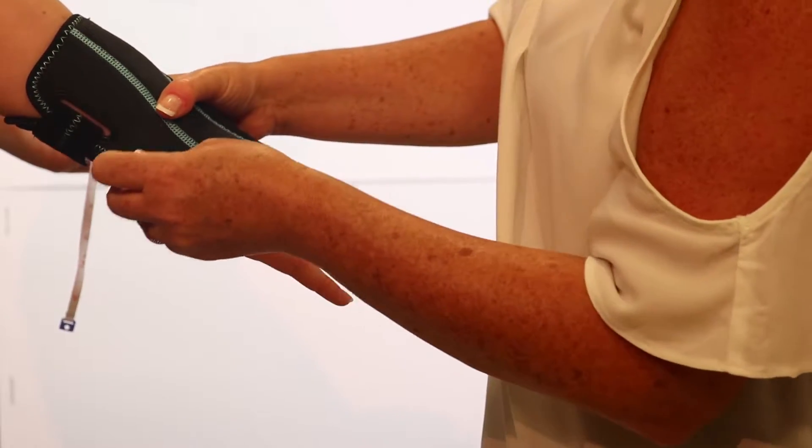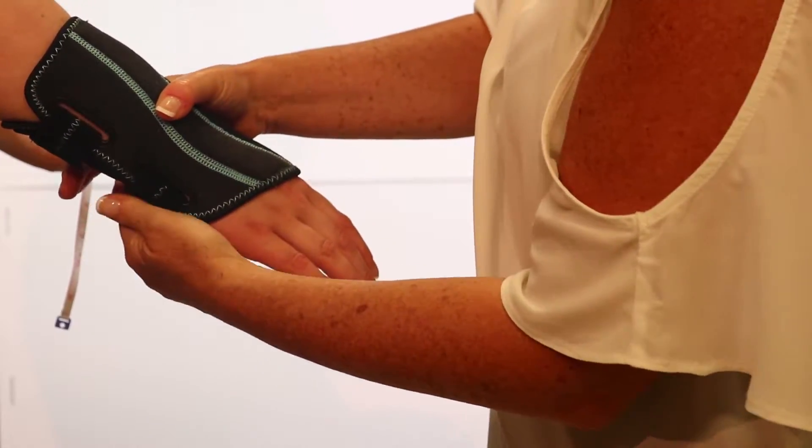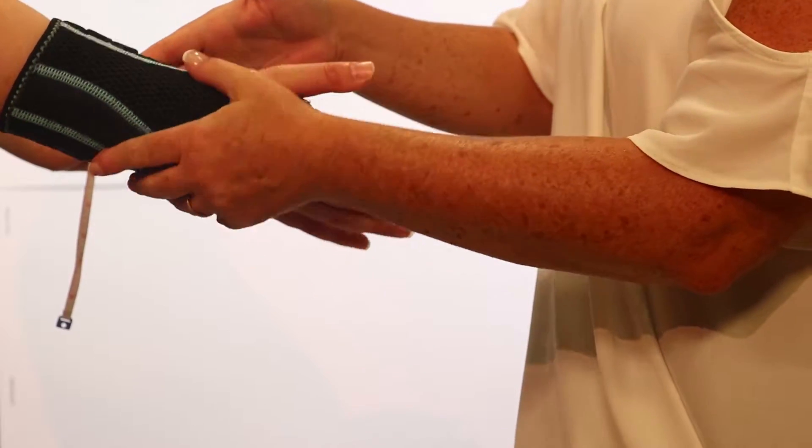Next, secure each of the two straps by pulling them across the side of the wrist and attaching to the base on the palm side of the wrist.